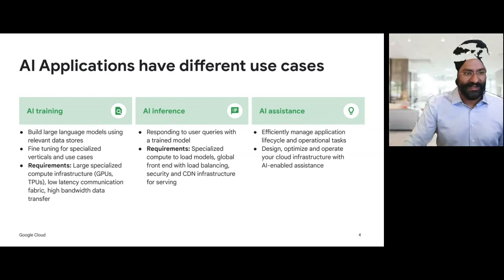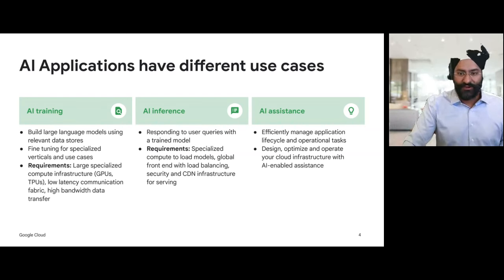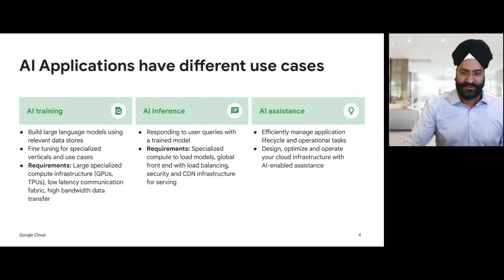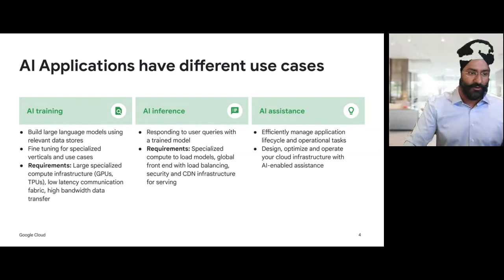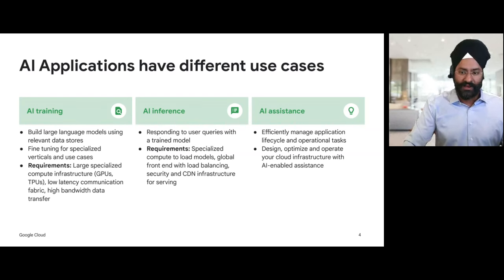First of all, we need to understand what kind of different AI applications are there. We categorize them into three main buckets: training, inferencing, and assistance. For training, we enable developers to build LLMs using relevant data stores. They can fine-tune their models or use other models for their specialized verticals — that could be healthcare, retail, financial services, etc. The requirements are large specialized compute infrastructure, which is GPU and TPUs, connected over a low latency fabric and high bandwidth data transfer.